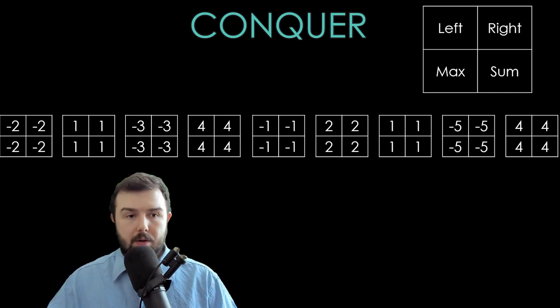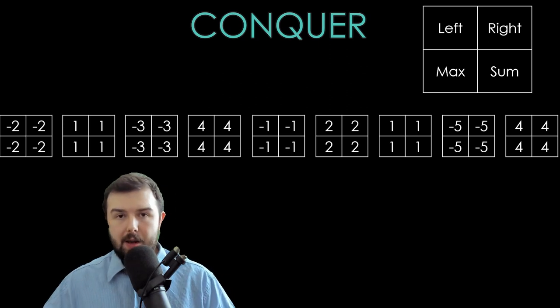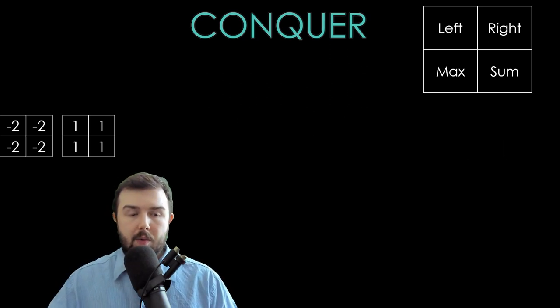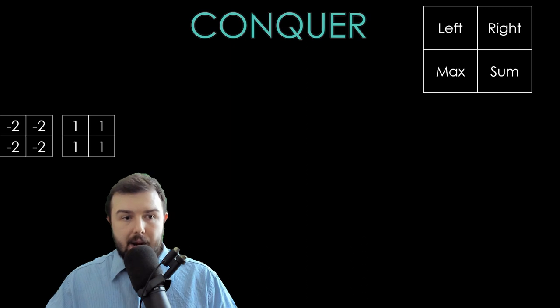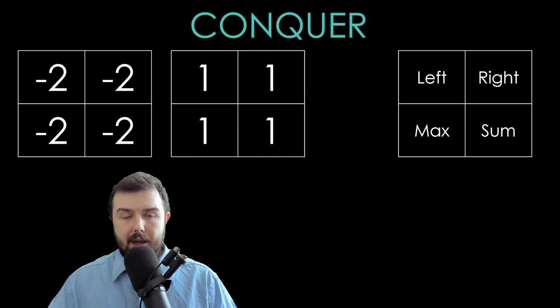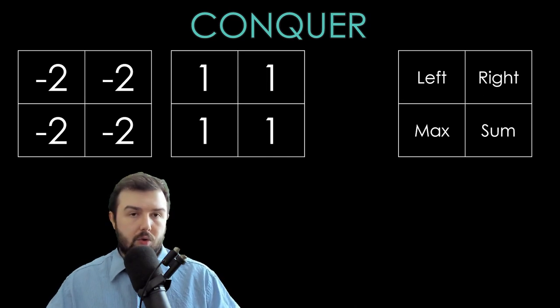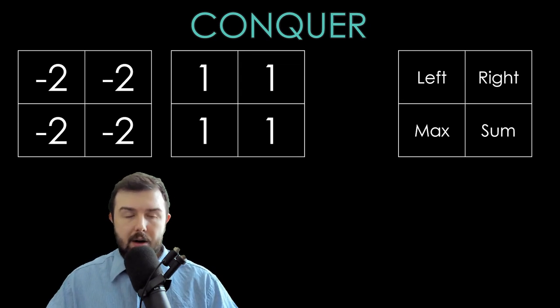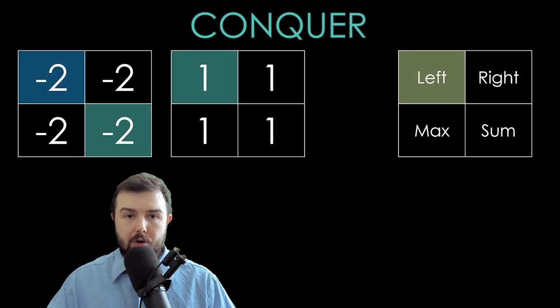The next step will be conquer. So we have a lot of small parts and we want to conquer them. Let's start with just two of them: minus two and one. So we need to summarize these two parts, to join them with each other with the next approach.